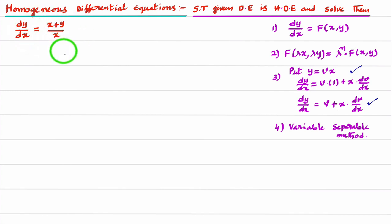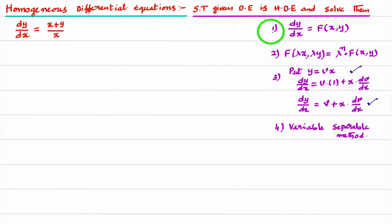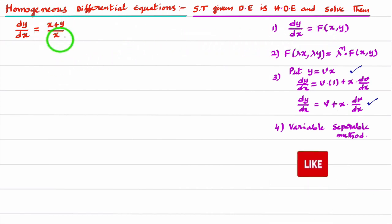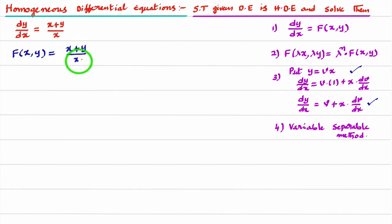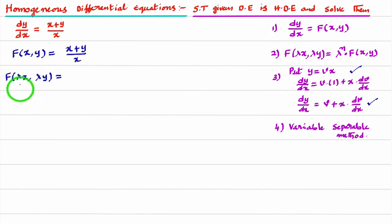How to show a differential equation is a homogeneous differential equation? We follow the first two steps. For any differential equation, first we write it in the form dy/dx = f(x, y). Here the given differential equation is already in that form. So f(x, y) is (x + y) divided by x. Now, if I am able to express f(λx, λy) in the form λⁿ · f(x, y), then it is a homogeneous differential equation of degree n. To calculate f(λx, λy), in place of x write λx and in place of y write λy.